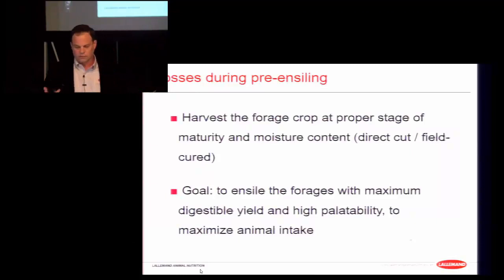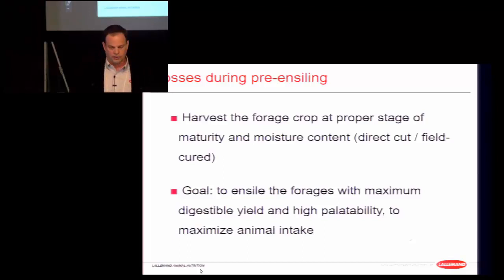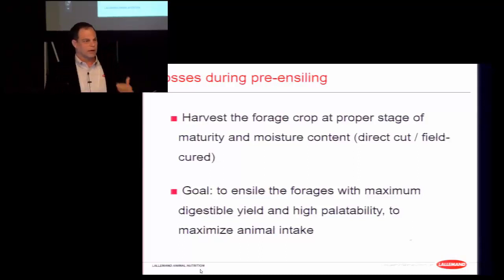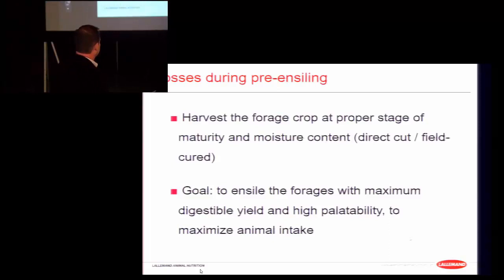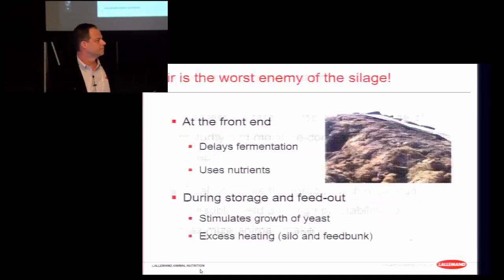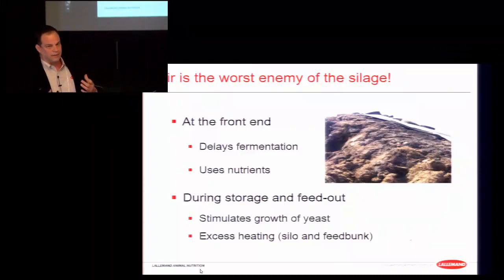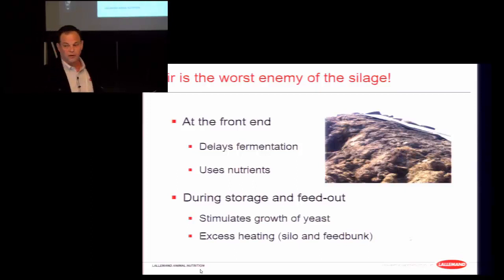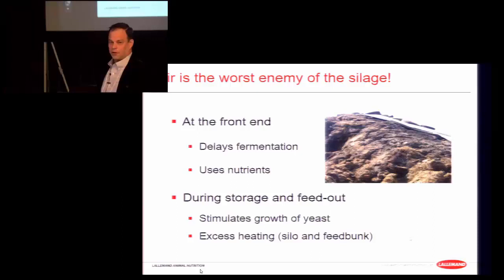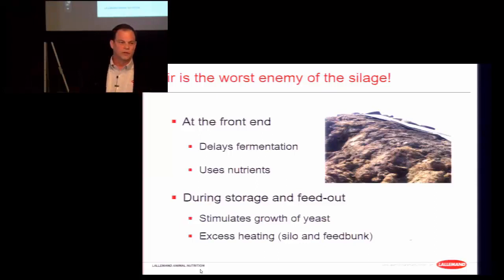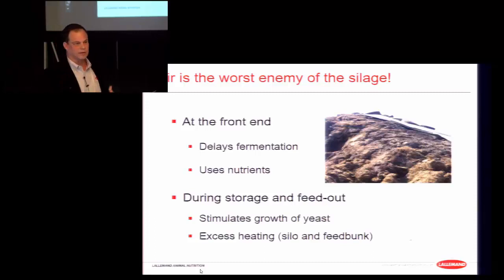We have to start with the forage crop at the right stage of maturity, dry matter, and moisture level to get the most yield and nutrients. We want to ensile the forage with maximum digestible yield and high palatability to maximize animal intake and animal production. Air is the worst enemy of silage. During the aerobic phase, the presence of air encourages plant respiration and aerobic microbes, which will delay fermentation, use nutrients, and during storage and feed-out stimulate the growth of spoilage and lactate-utilizing yeasts, leading to aerobic deterioration and heating.